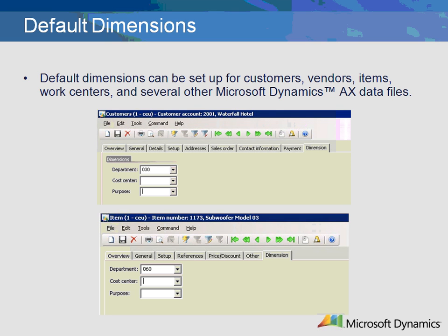In addition to setting default dimensions in the chart of accounts, default dimensions can be set up for customers, vendors, items, work centers, and several other Microsoft Dynamics AX data files. In this example, customer number 2001 has a default dimension for department — when a sales order is entered, these values will default into the order. Item 1173 has a default dimension for department; when a sales order, purchase order, or production order is entered for this item, the department dimension will default. Setting up default values will help expedite data entry and ensure that the correct dimensions are used.